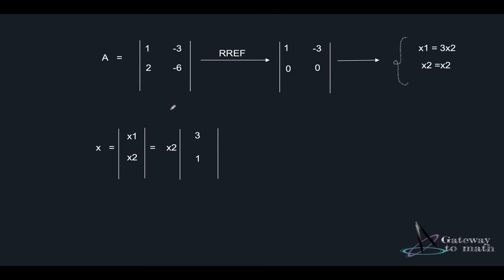Let's take another example — this time the matrix is not in row reduced echelon form. I've brought it into RREF already. What I did was multiply the first row by two and subtract it from the second row to get zero entries. If you want a more detailed walkthrough of how this matrix is brought into RREF, feel free to let me know in the comment section and I can share it.